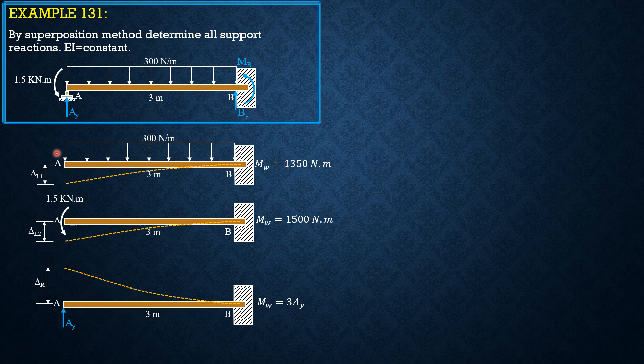So EI delta L1 plus EI delta L2 must be equal to EI delta R. That's our final equation to solve for AY.